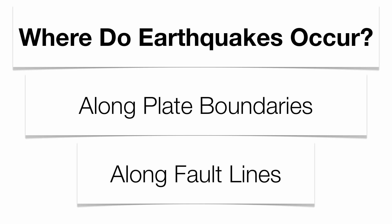Usually, along those plate boundaries where the earthquakes occur, those are what we'll call fault lines. Fault lines are cracks in a rock where a rock moves. And whenever the rock moves, that's where the earthquake is going to occur, and energy is going to be emitted.